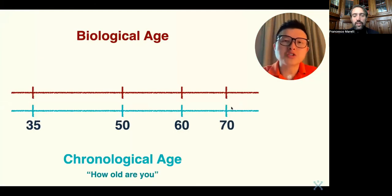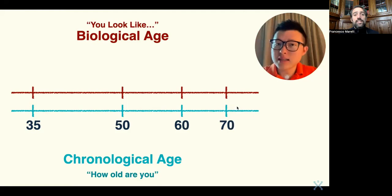To put it simply, chronological age means how old you are. For example, I am 29 years old. But somebody says you look like 20 years old.